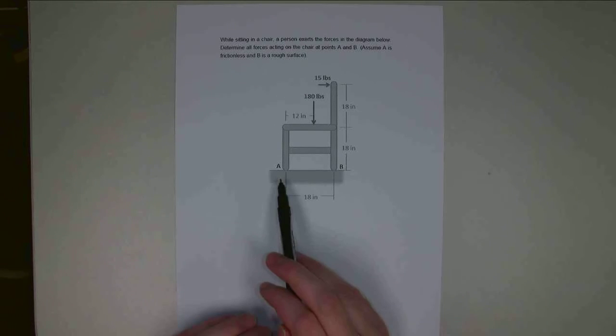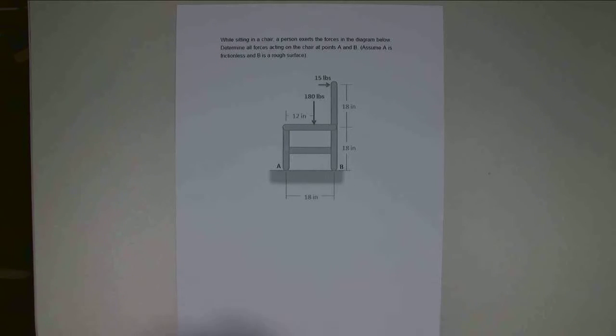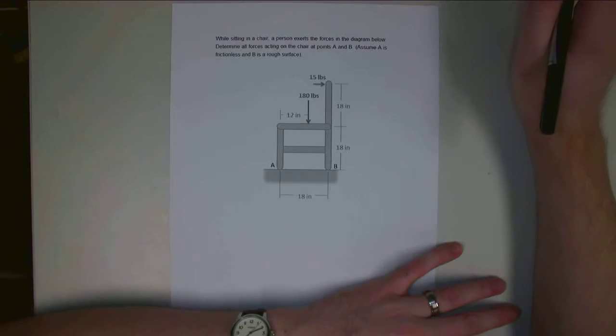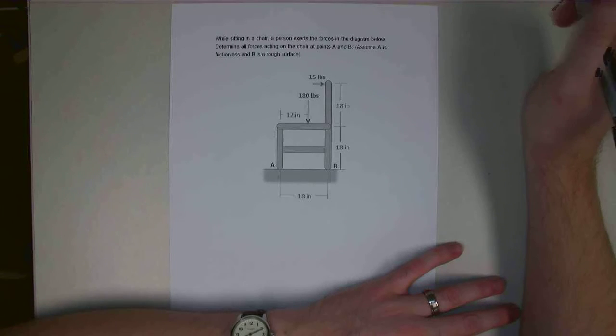the 180-pound force and the 15-pound force, acting on it as follows. So we're assuming there's no friction at A. It's a smooth surface and it's a rough surface at B. So all the friction is going to exist back there. And I want to determine all of the forces acting at points A and points B for this particular chair.